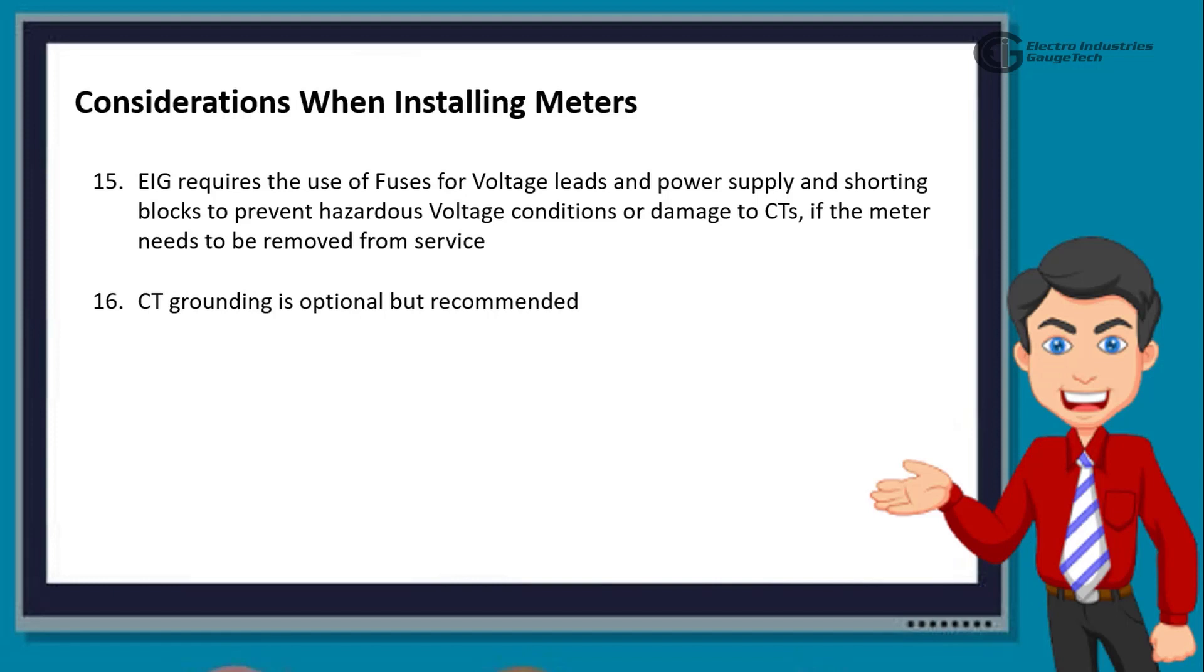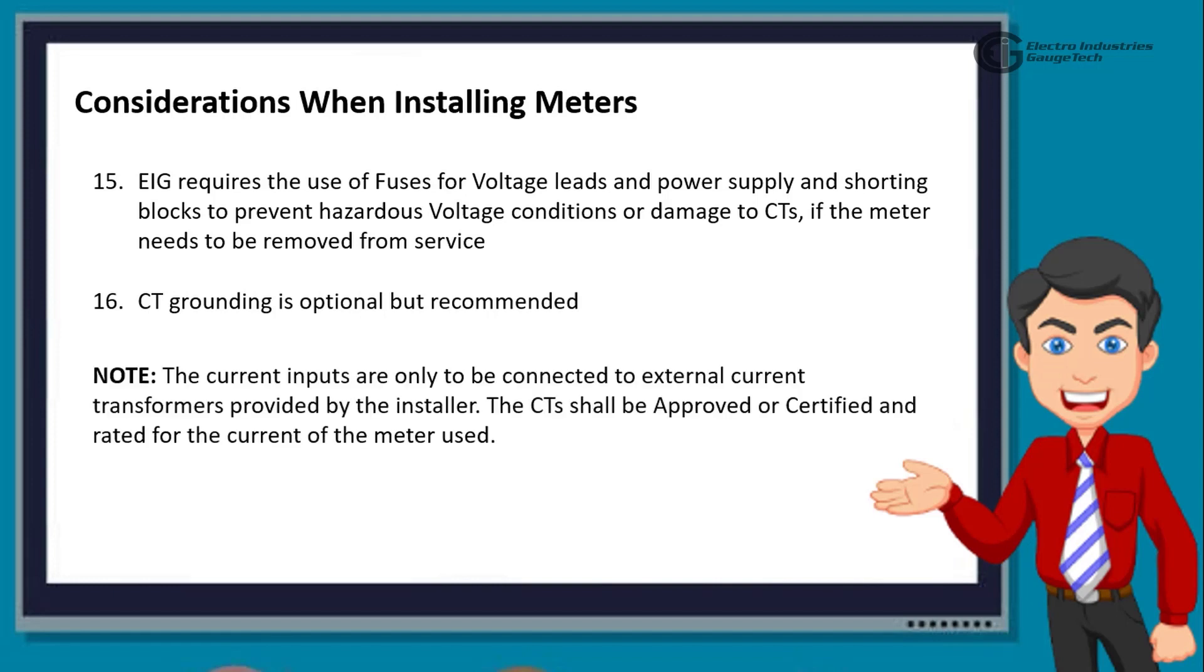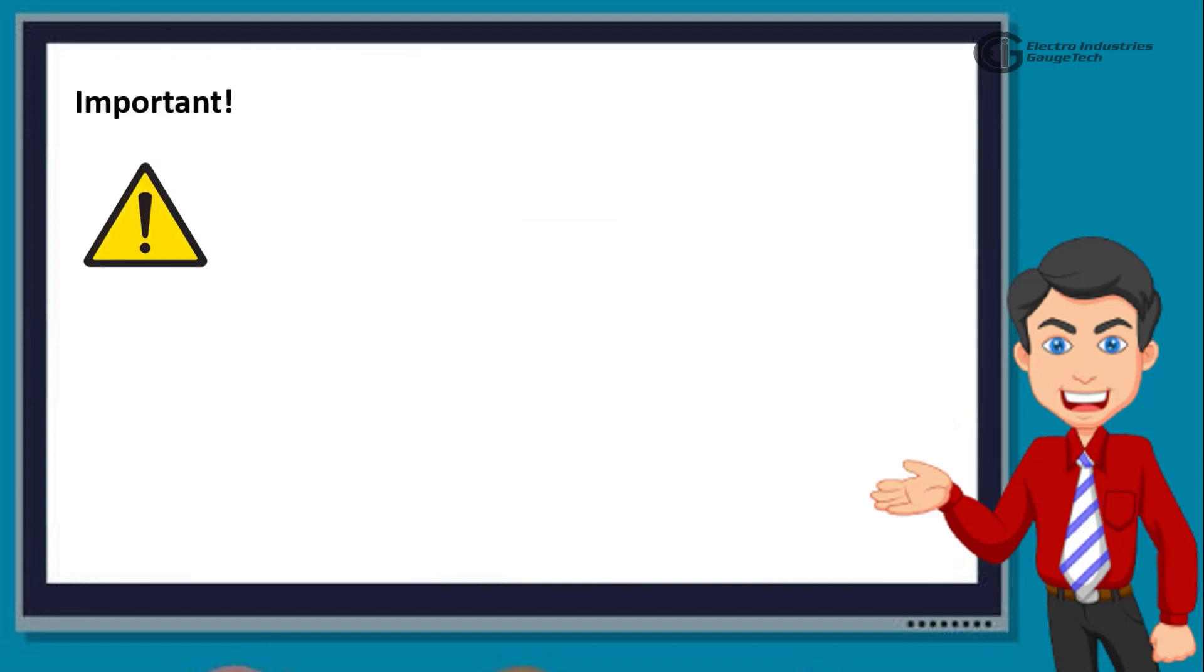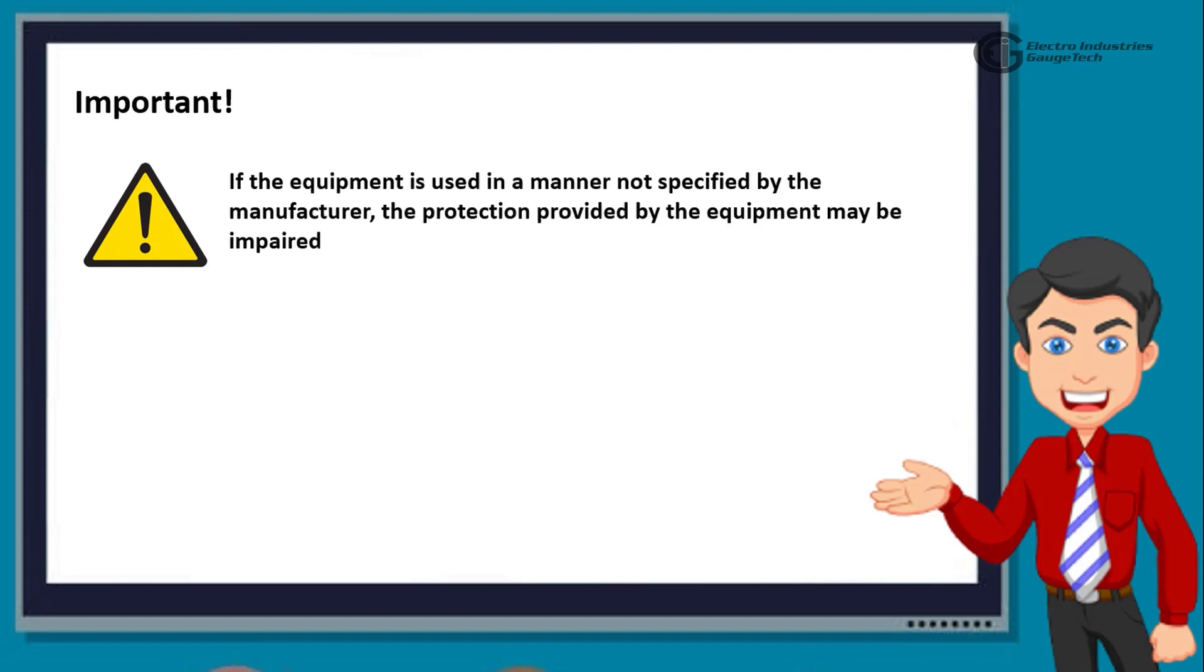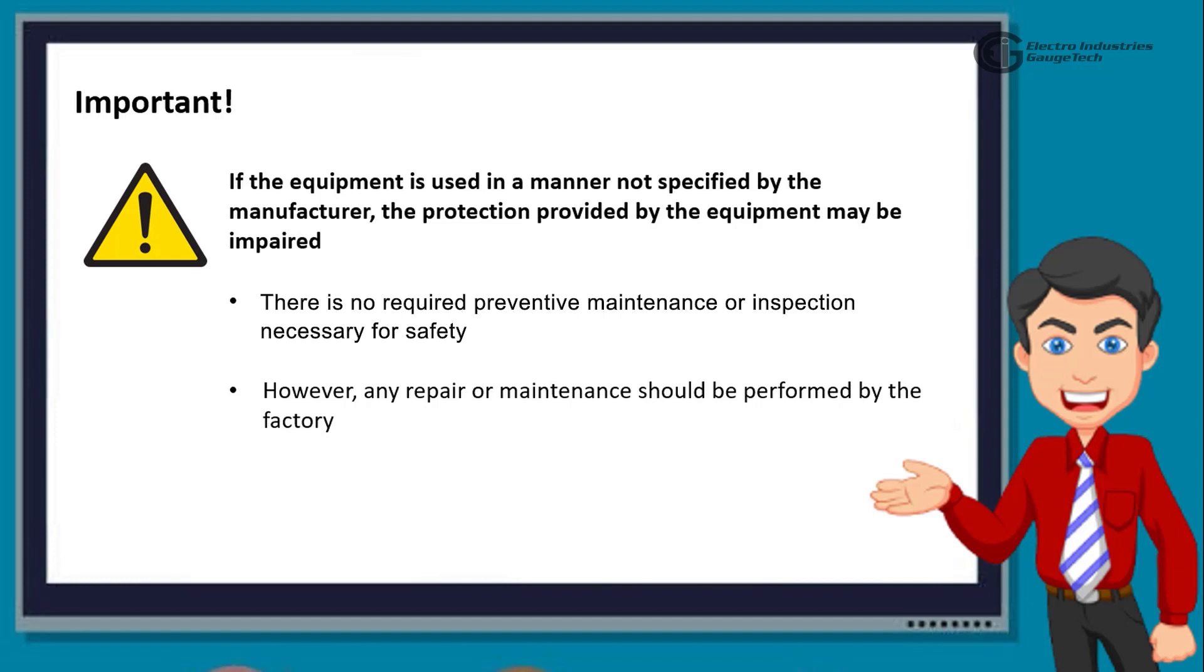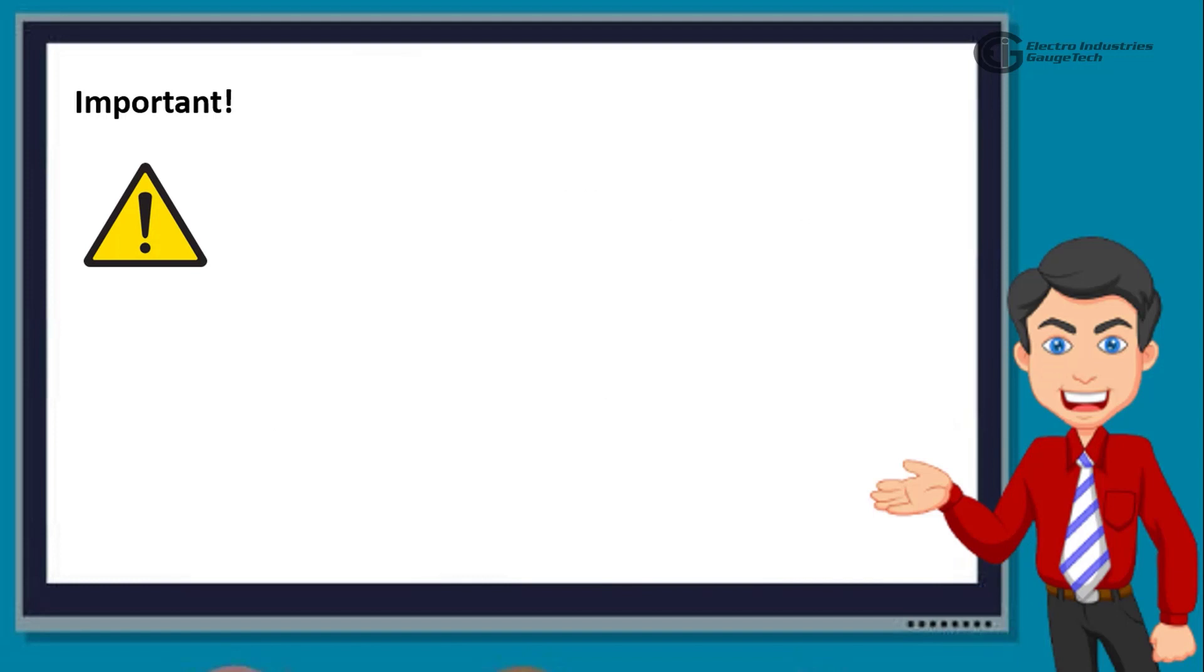CT grounding is optional but recommended. Note that the current inputs are only to be connected to external current transformers provided by the installer. The CTs shall be approved or certified and rated for the current of the meter used. A few important things are also required to be taken into consideration. If the equipment is used in a manner not specified by the manufacturer, the protection provided by the equipment may be impaired. There is no required preventive maintenance or inspection necessary for safety. However, any repair or maintenance should be performed by the factory.